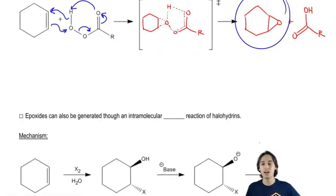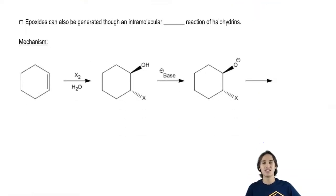Now, there's actually one more way that we can make epoxides and that's by using halohydrins.